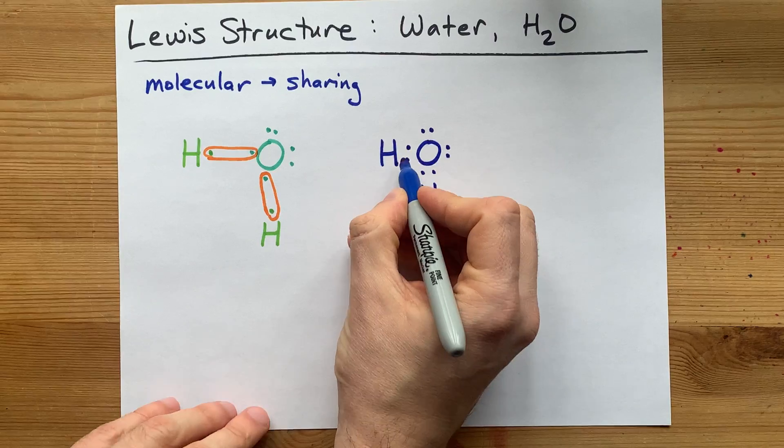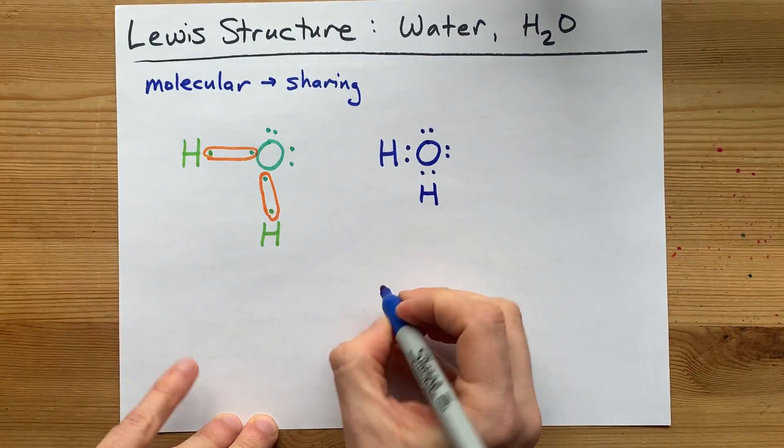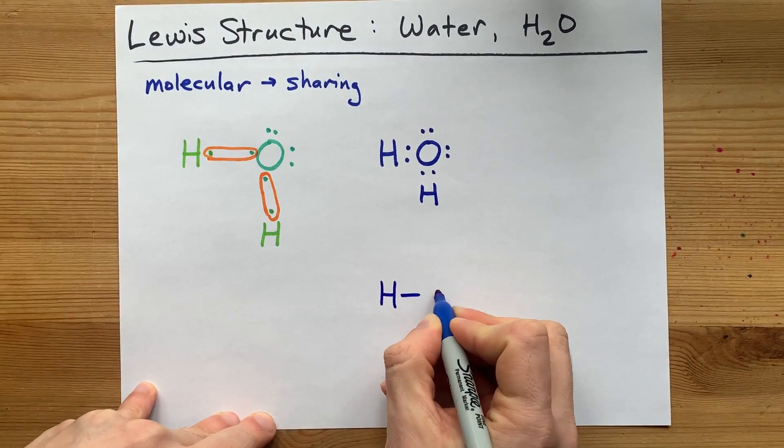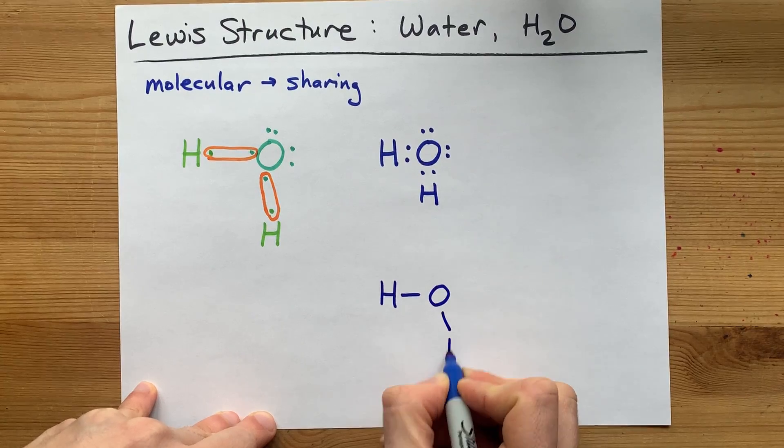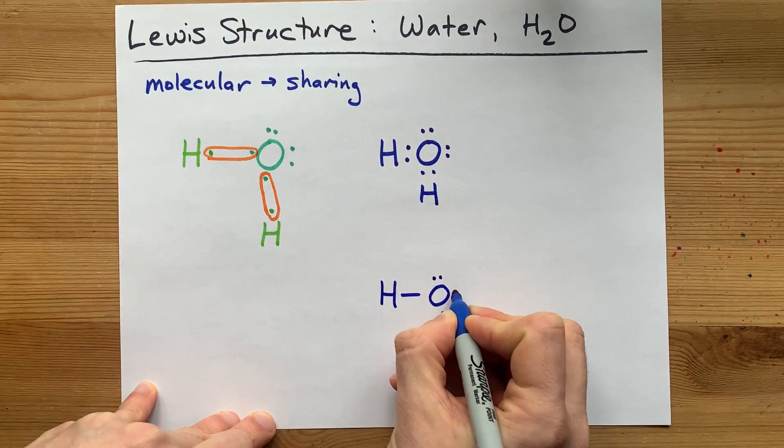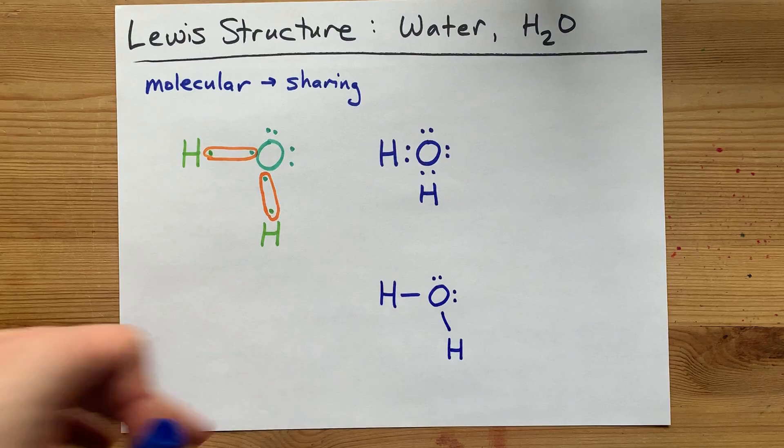Perfection. Now, I like drawing my bonding pairs with horizontal lines, and perhaps you do as well. One, two, three, four non-bonding electrons there.